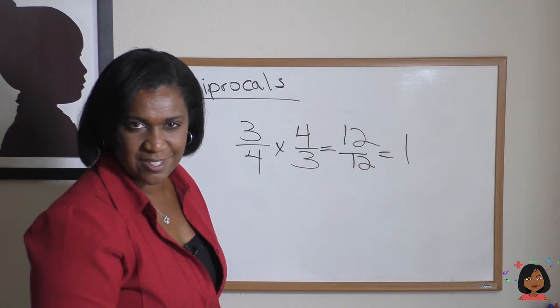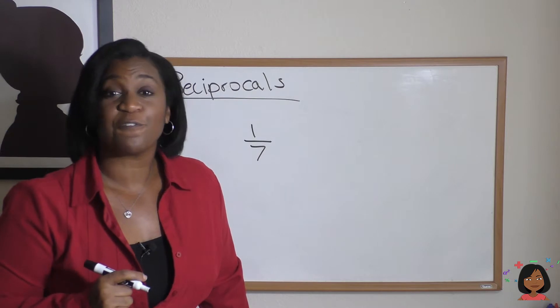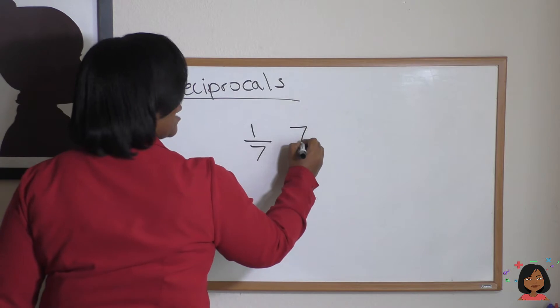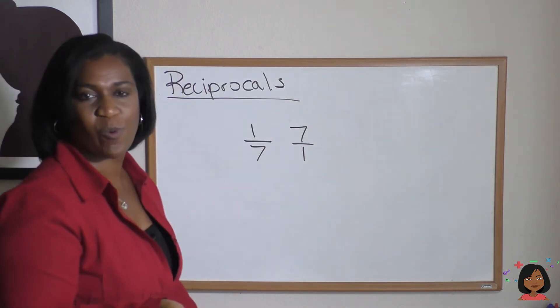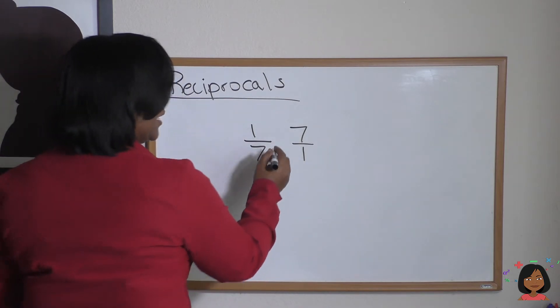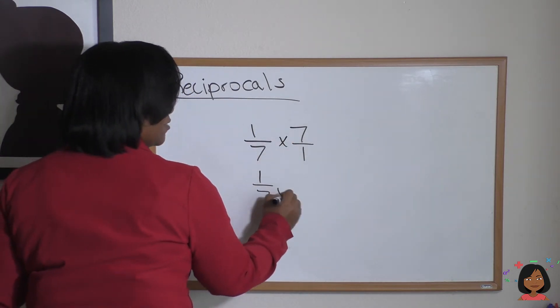You still need more convincing? I've got one more example for you. So what's the reciprocal for 1/7? The reciprocal for 1/7 is the same thing as saying 7/1. 7/1 is the same thing as saying 7, isn't it? So we don't even really need the /1. We could just do 1/7 × 7.